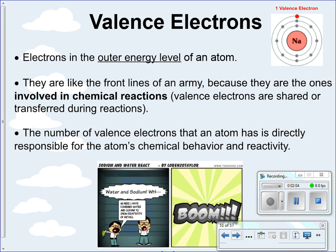To summarize: valence electrons are the electrons in the outer energy level of your atom. They're like the front lines of an army — they're the ones always involved in chemical reactions. They're shared or transferred, which we'll get into later with bonding. The number of valence electrons that an atom has is going to be directly responsible for its chemical behavior and reactivity.